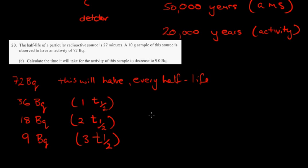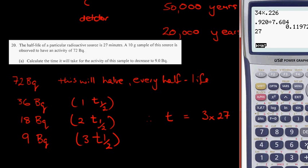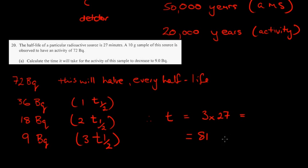So the time it will take for the activity to decrease to 9 becquerels is three times 27 minutes, which equals 81 minutes. Thanks for watching.